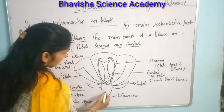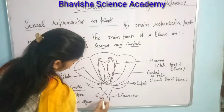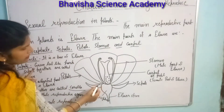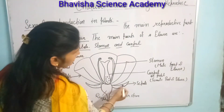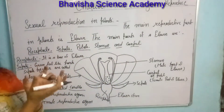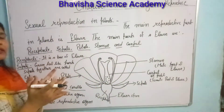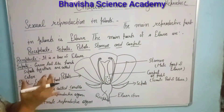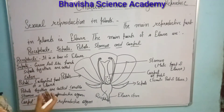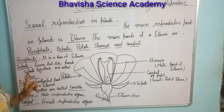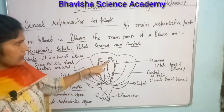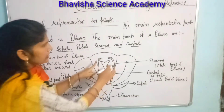The green-colored base of the flower is known as the receptacle. The green-colored leaves at the base are known as sepals — they provide the base for the whole flower. When sepals group together, that is known as the calyx. A group of green leaves is known as the calyx.